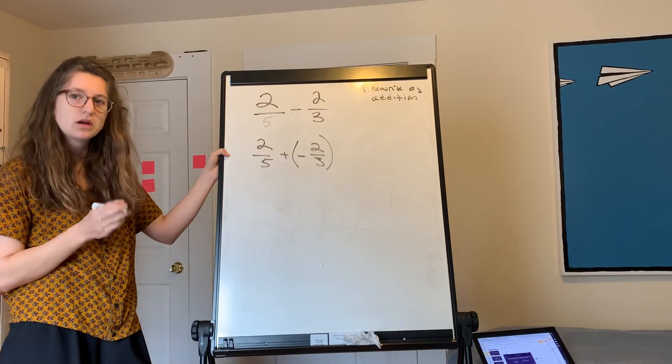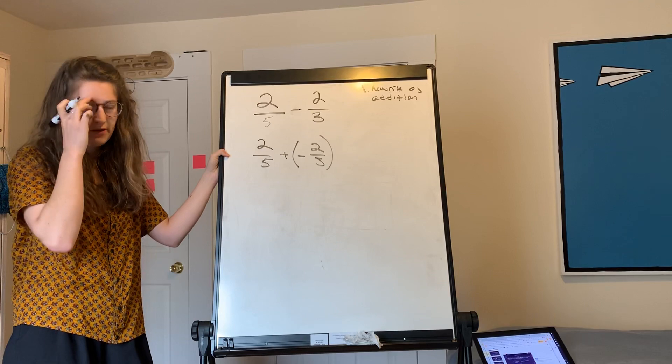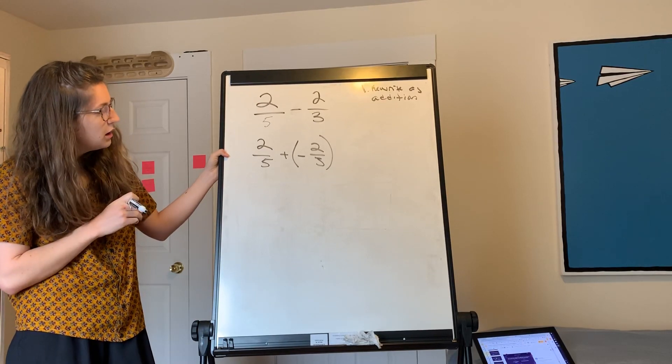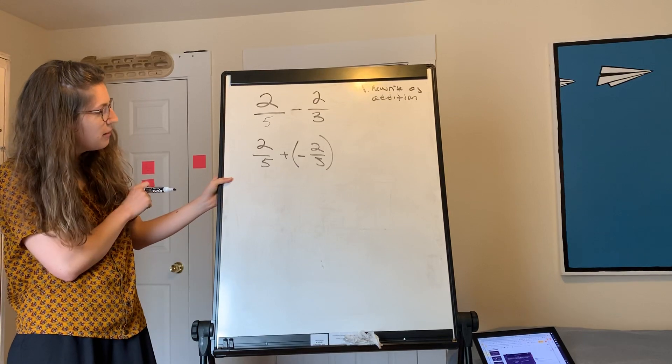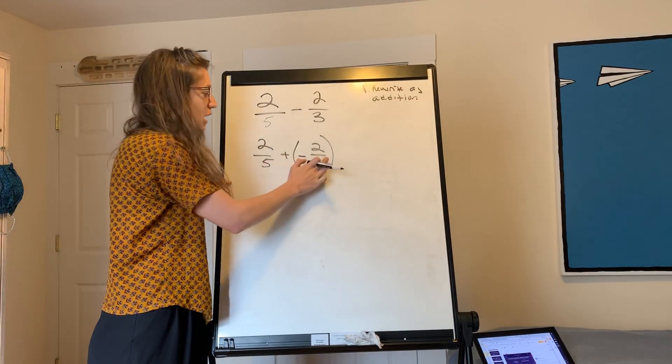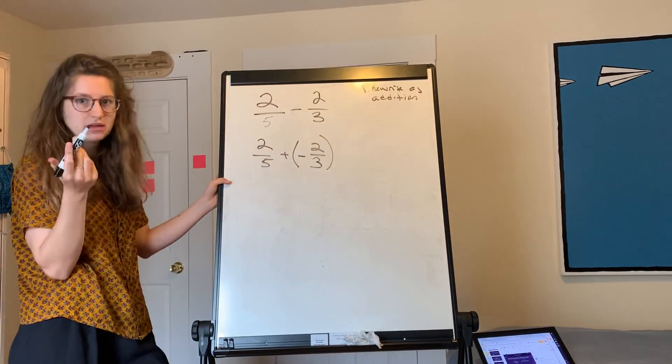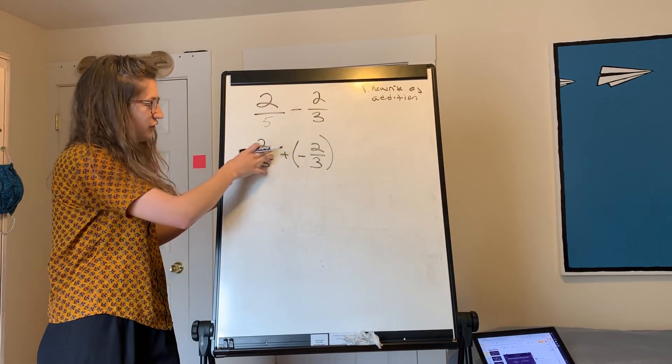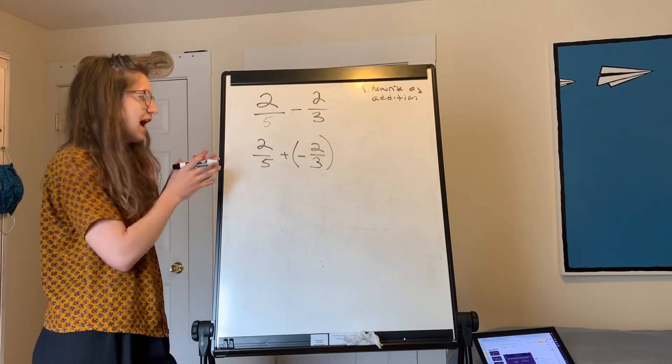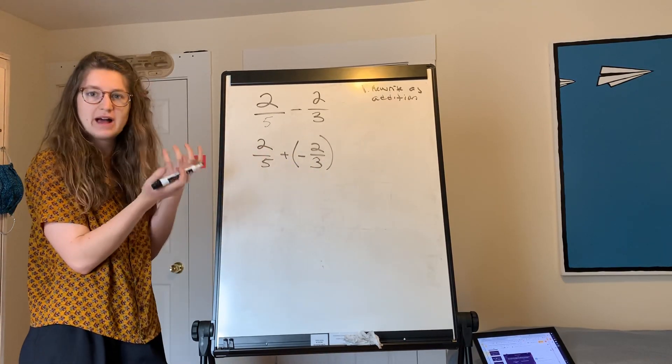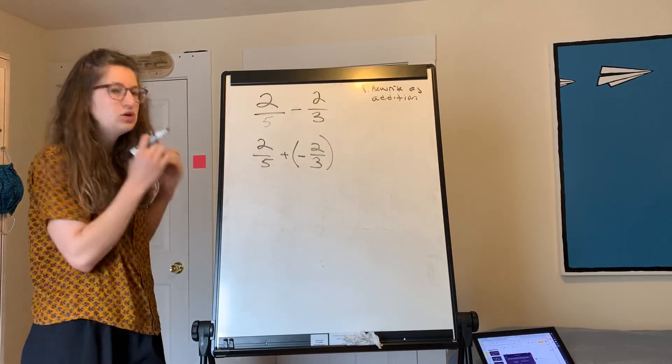If that step's weird, go back to the lesson on subtracting positive and negative numbers. So now we need to actually do this and we're going to do it by finding common denominators. You can't just add two-fifths and two-thirds when the denominators are different because it's like trying to add apples to oranges. You need to make these look the same so you can really compare them.